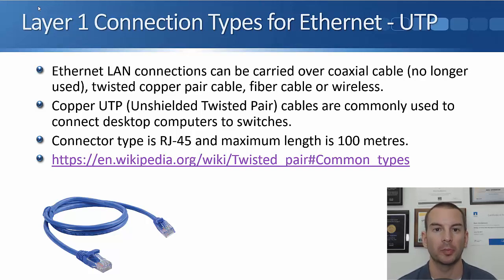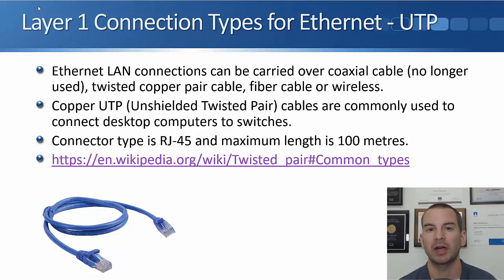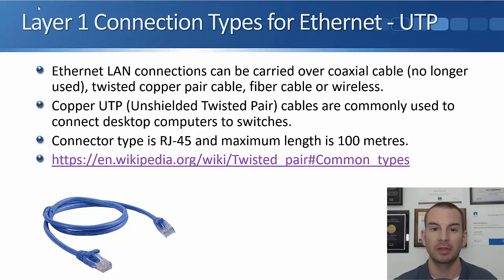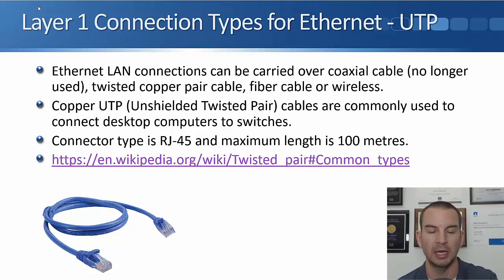Starting off with copper cables — we use UTP cables, unshielded twisted pair. They are commonly used to connect desktop computers to switches. The connector type is RJ45 and the maximum length of the cable is 100 meters. If you look at the picture on the slide, I'm sure you've seen a standard network cable before — that's the copper cable we're talking about, with an RJ45 connector at the end.